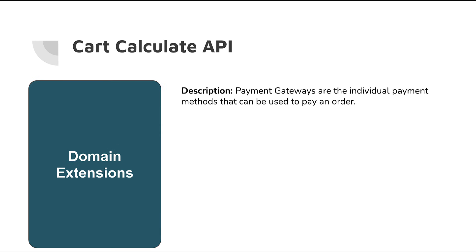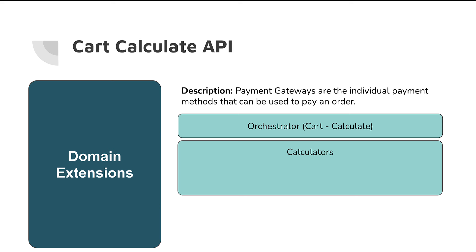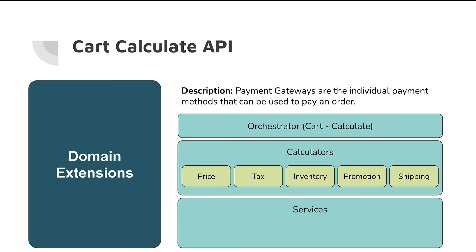Within domain extensions we have what the documentation calls the cart calculate API, which allows us to completely customize how the cart and checkout process works. There are a few different sections to pull this off. First, we have our orchestrator — think of it as your high-level governing logic that says when and what executes. Second, we have our calculators, which consist of price, tax, inventory, promotions, and shipping. Lastly, we have our services, which include price, tax, and inventory. Together these let you manipulate exactly what gets fired, what happens in each functional area, and when they get triggered.